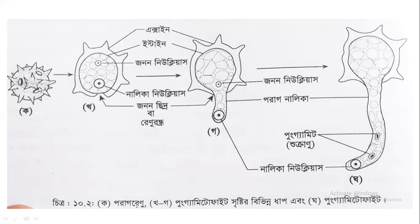There are two nuclei: the first nucleus and the second nucleus. The first is the generative nucleus and the second is the tube nucleus.